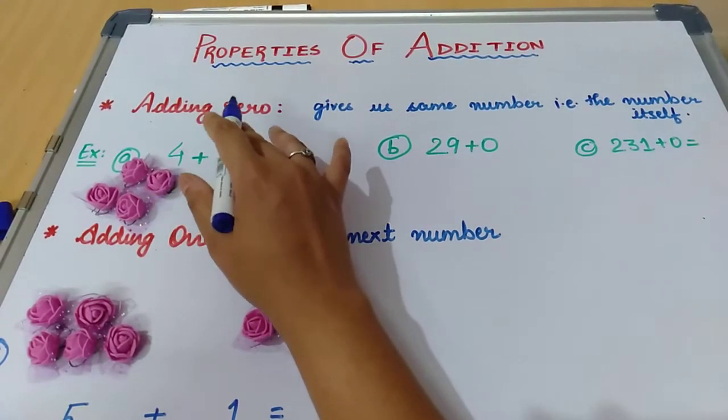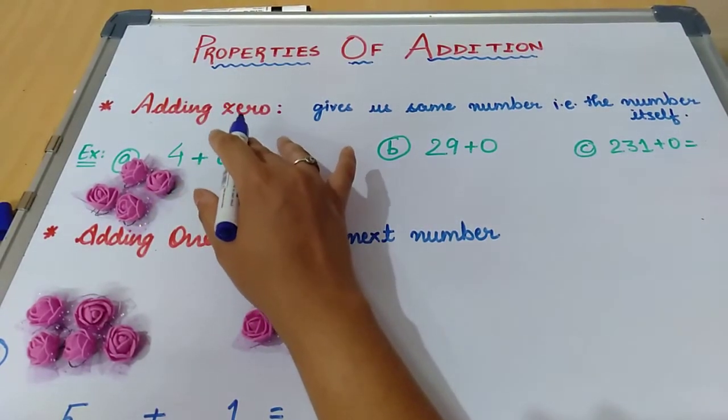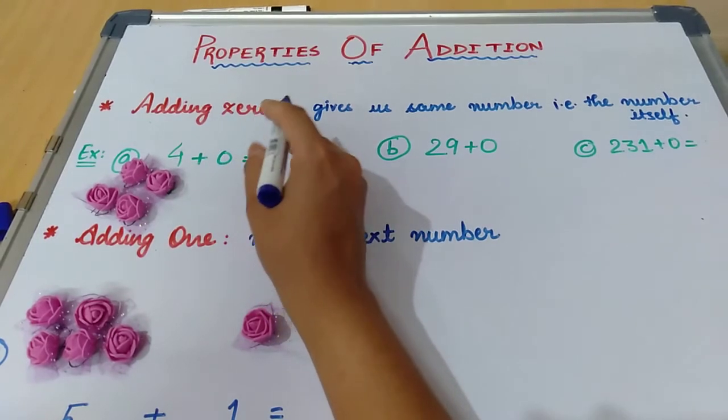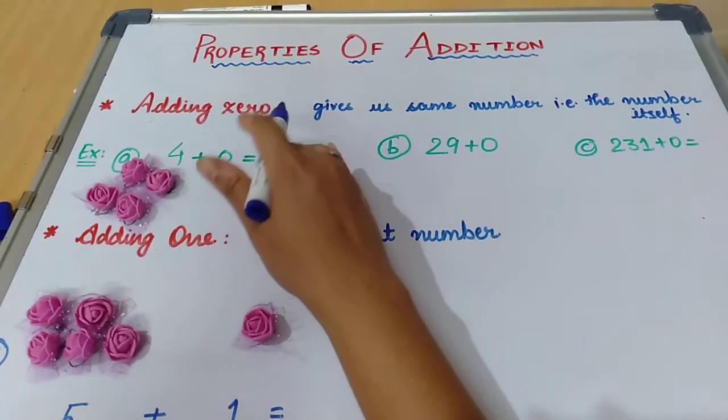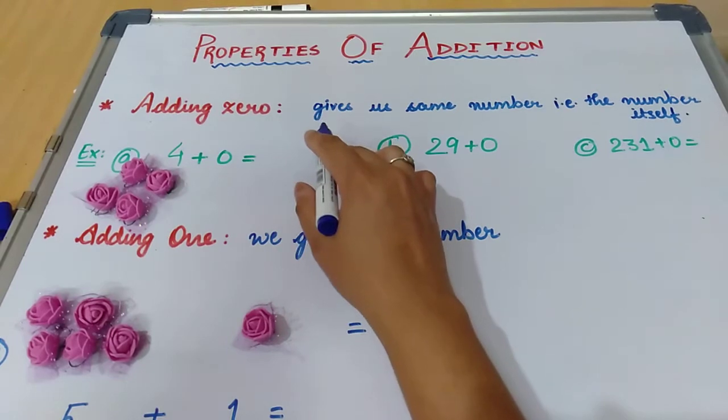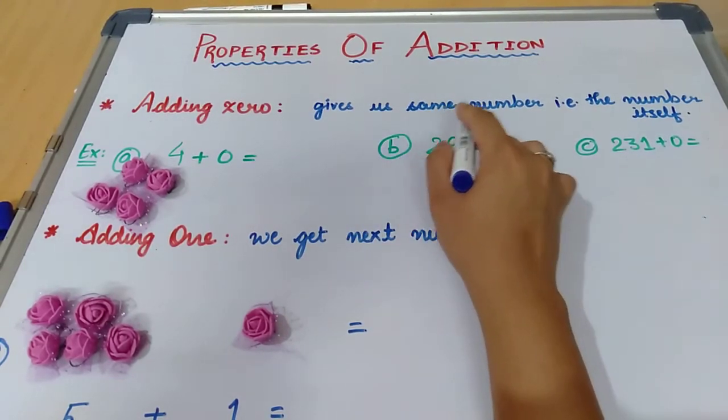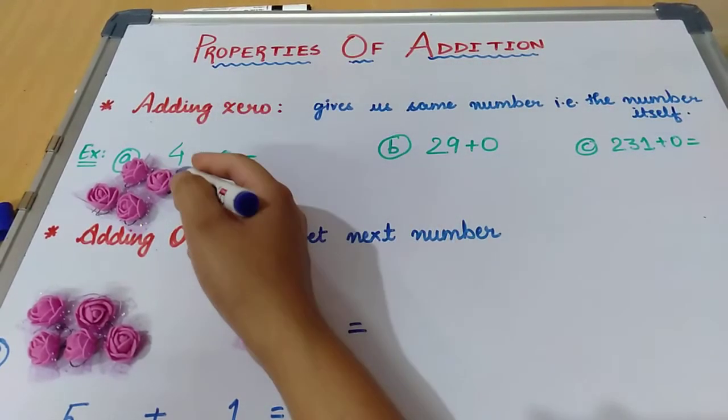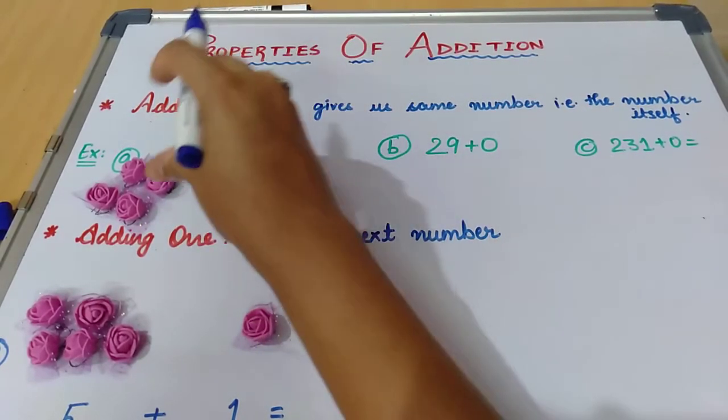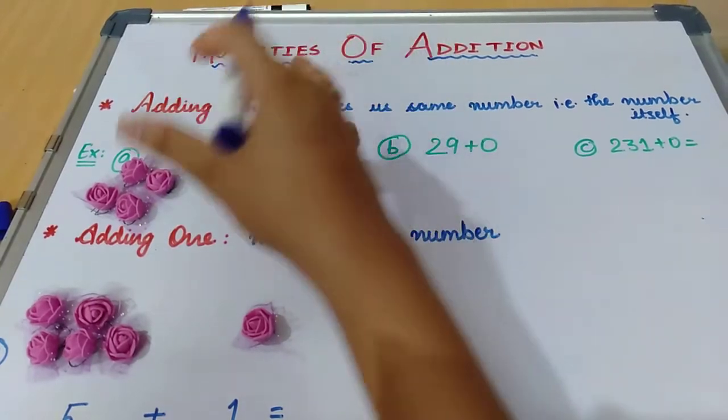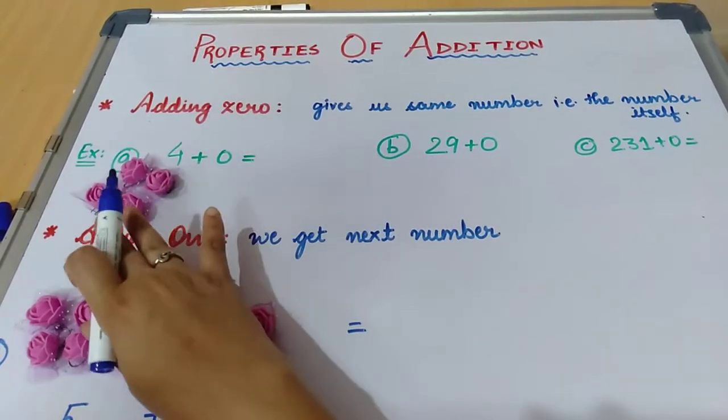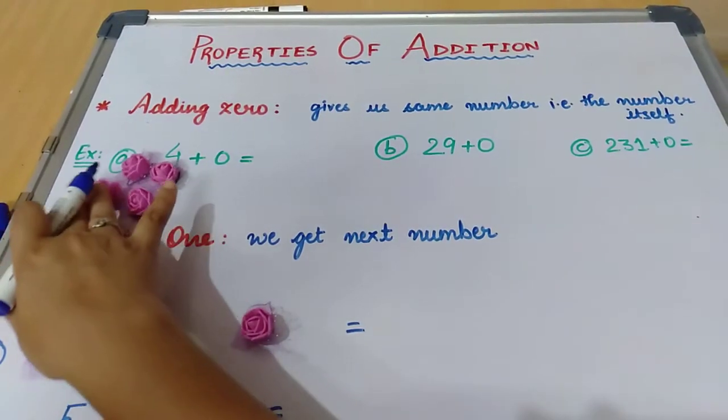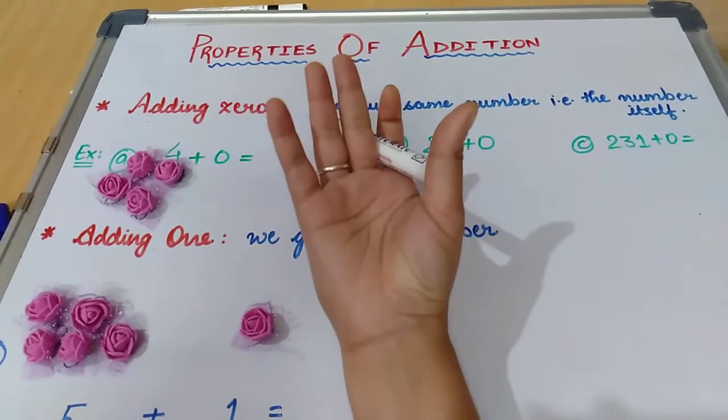If any number is given to you and you have to add zero to that number, if we add zero to the given number we always get the same number, that is the number itself. Jo number hum ne liya hai agar us mein hum zero add karenge to hum mein wahi number milega. Why? Like suppose I have four flowers. Zero ka matlab kya hota hai? Kuch bhi nahi. Zero means nothing.